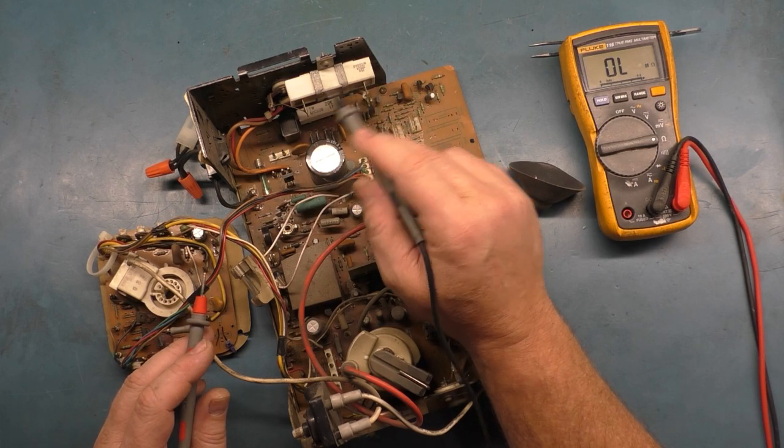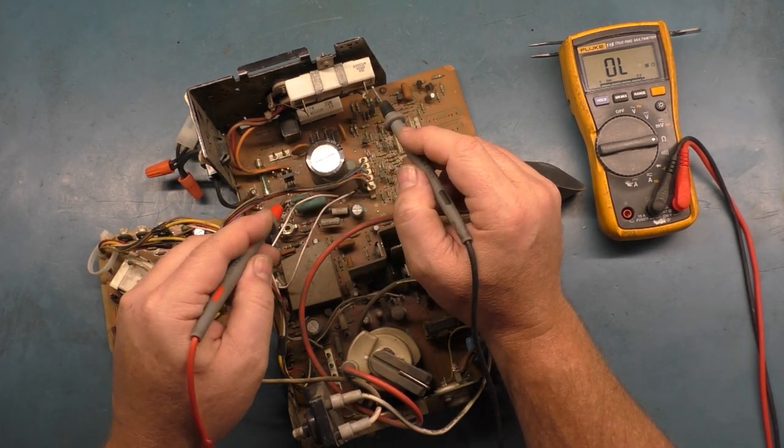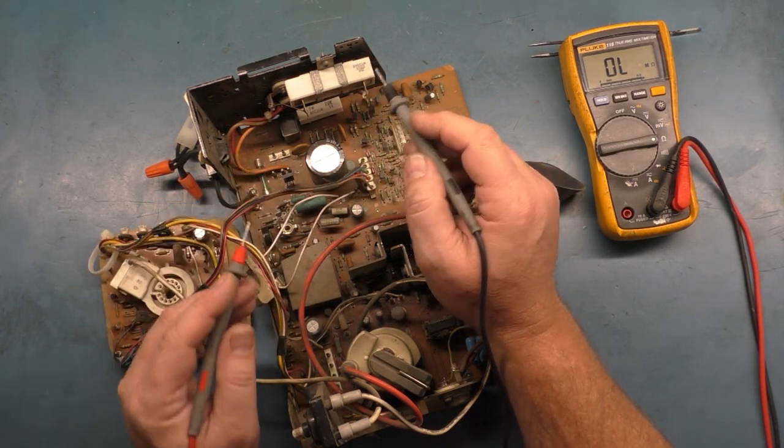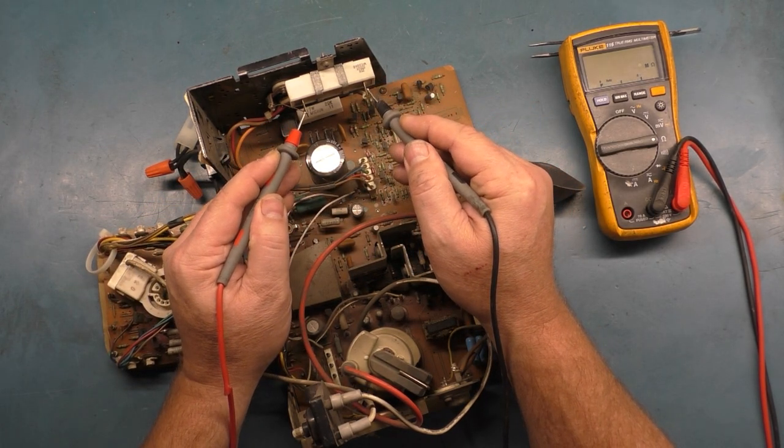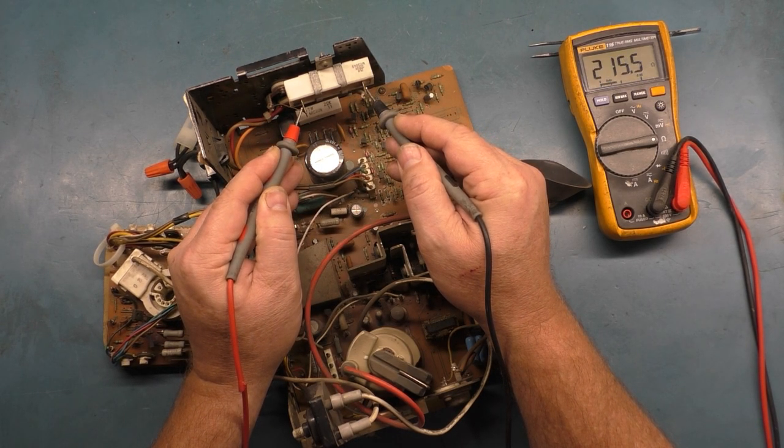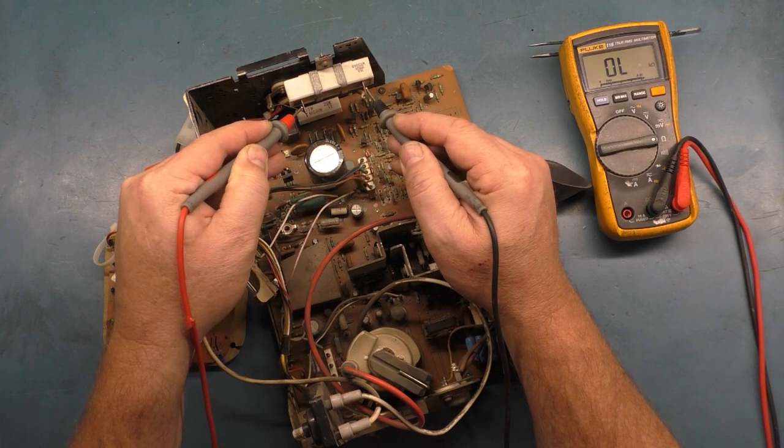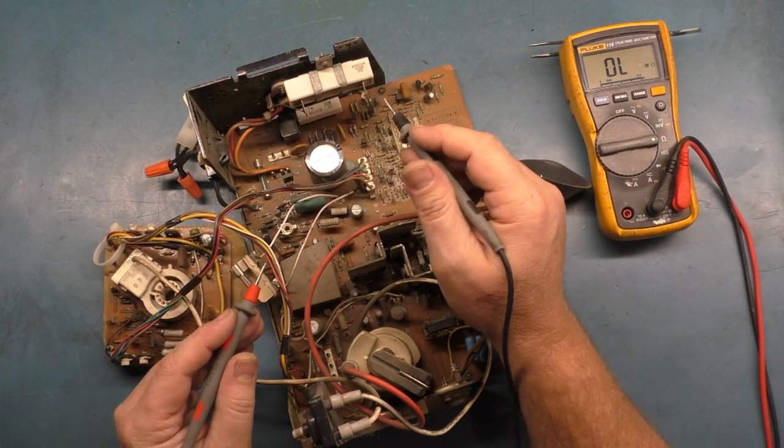Our B+ resistor should read 220 ohms. If it reads zero, then our voltage regulator is shorted, but if that was the case it would take out the fuse. If we test our B+ resistor, we get 218, 219 ohms, so the resistor's good and our regulator should be okay.